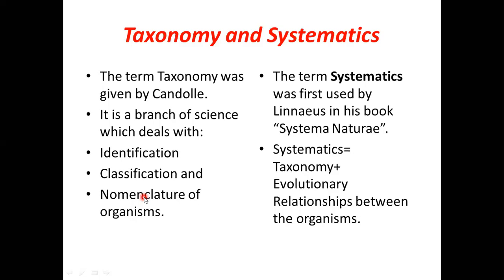In chemistry, there are elements — metals and non-metals — and we classify them based on physical and chemical properties. In biology, identification is done with the help of morphology and anatomy. After that, we classify it, and then we give it a nomenclature.